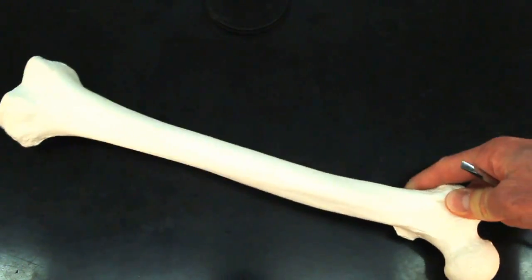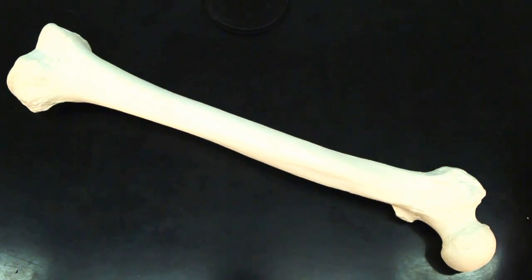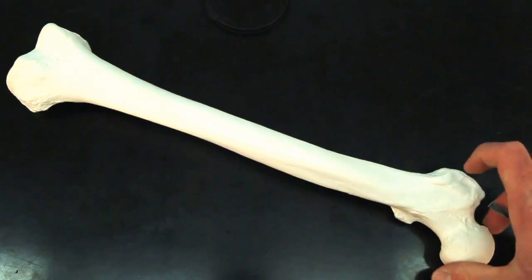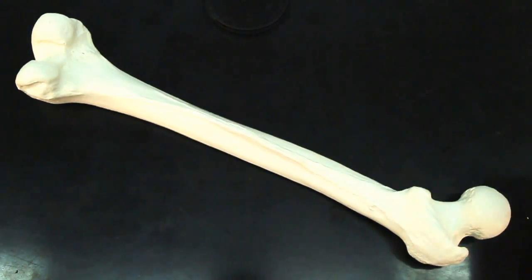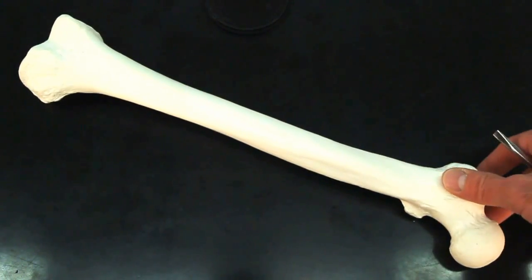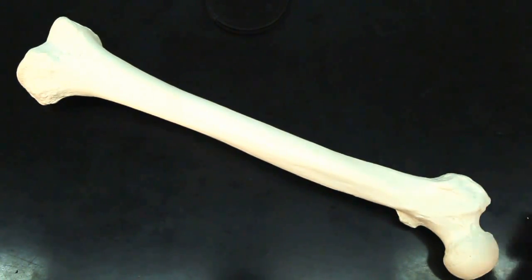So how do we know if this is a right or a left? Well, the head has to be medial, and we know the linea aspera must be posterior. That means this is a right femur.